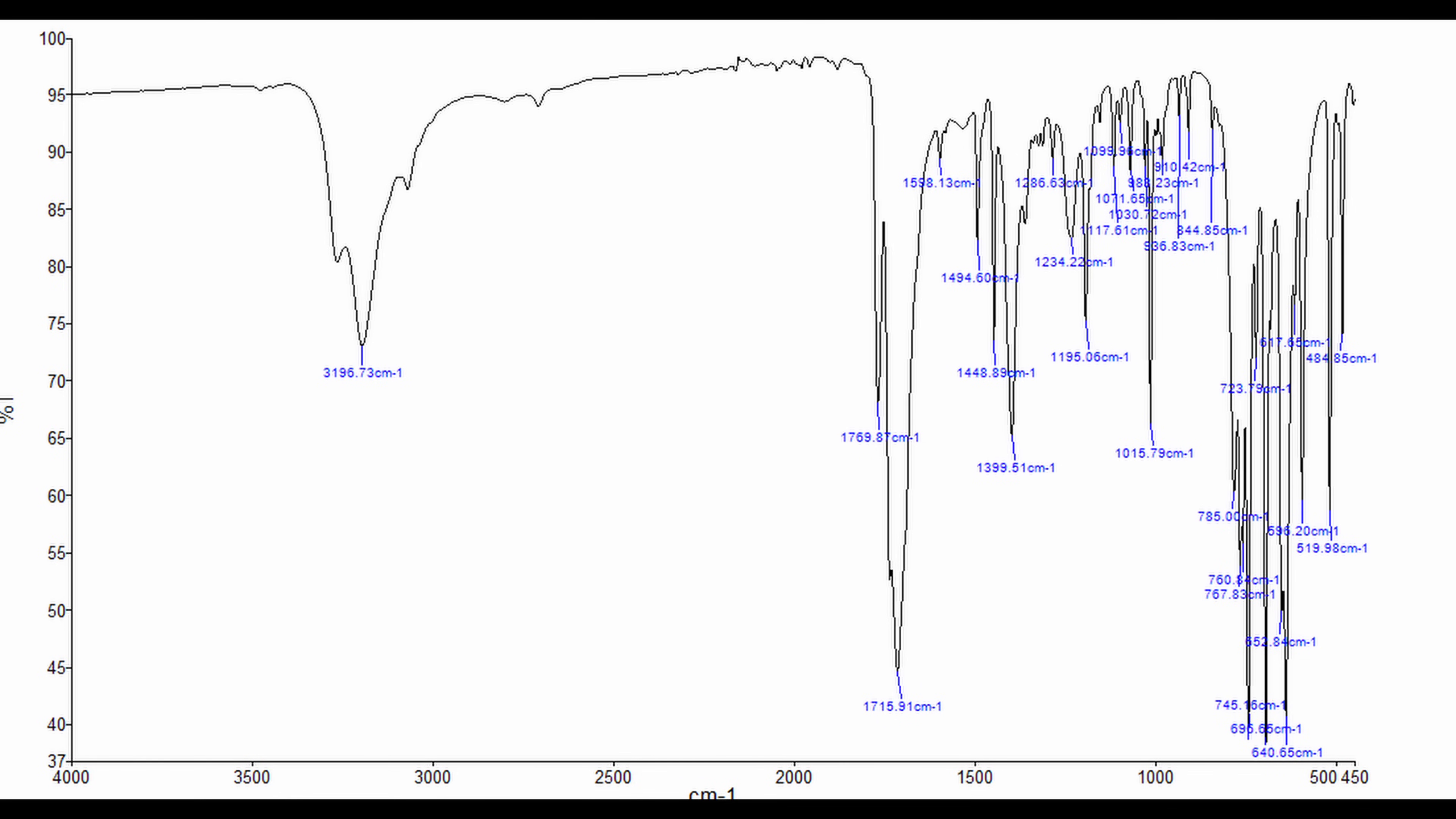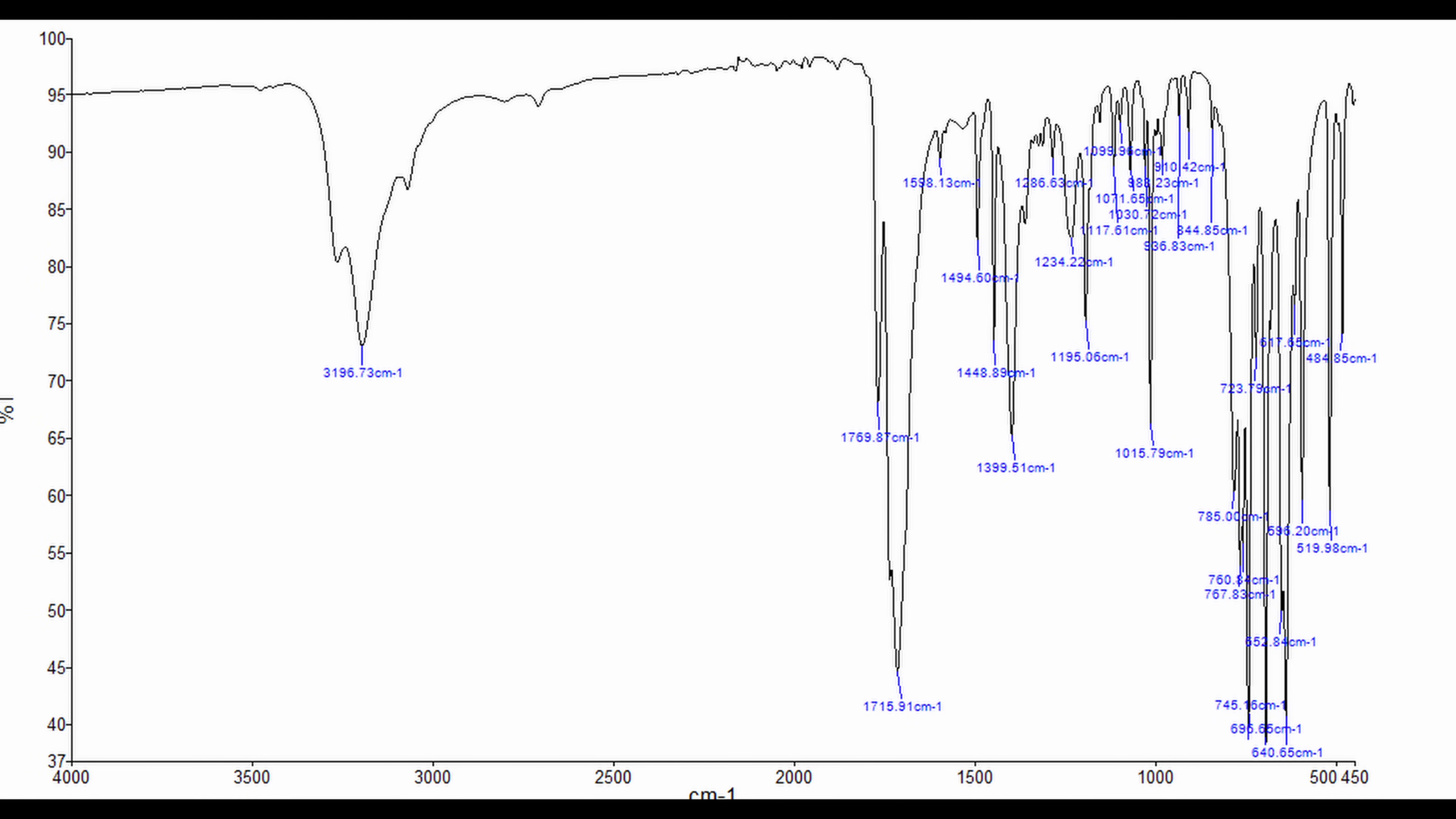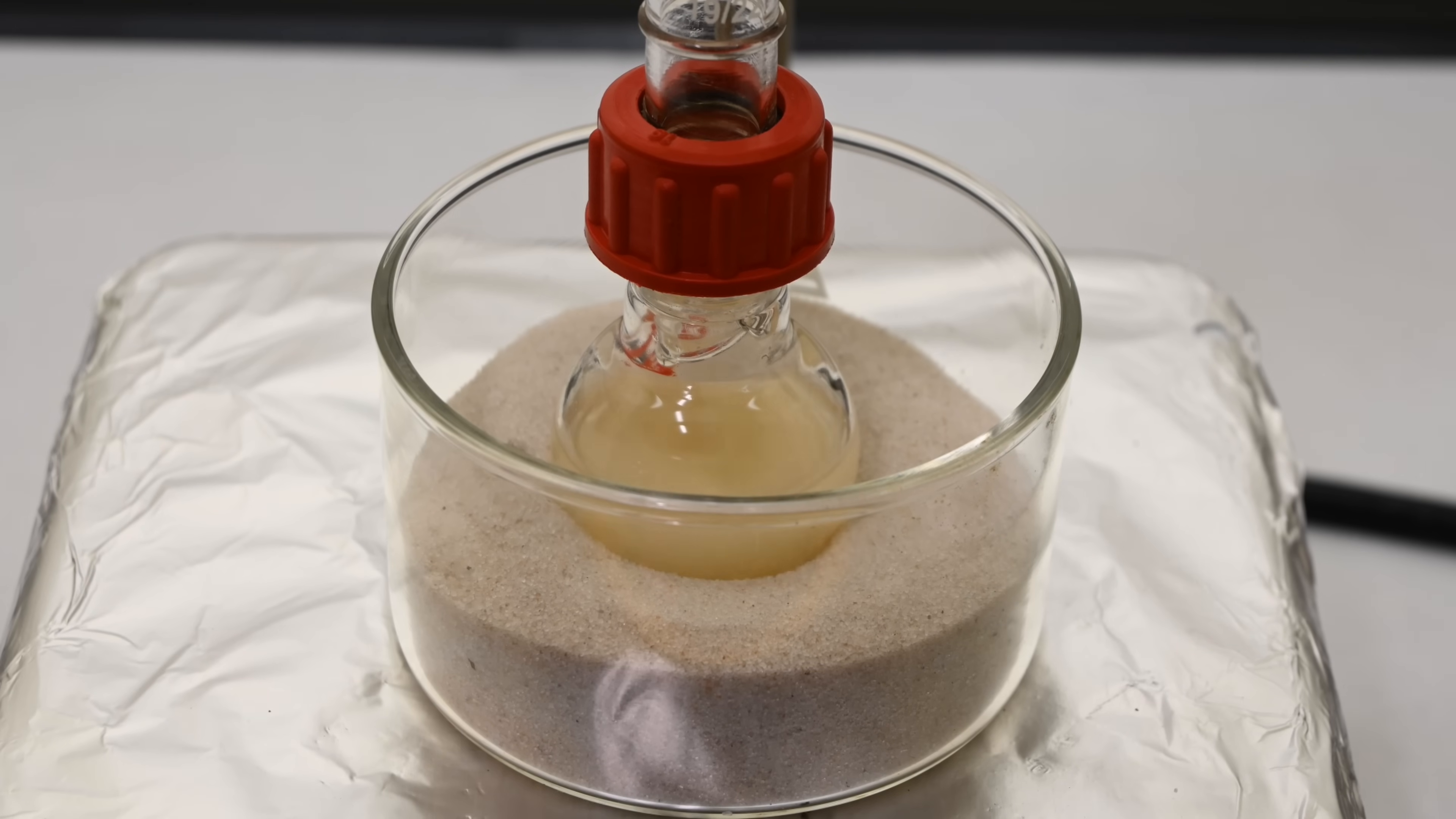The amide 1 band, predominantly associated with the carbonyl stretching vibration, typically appears clearly and strongly near 1700, reflecting the presence of a lactam carbonyl group within the hydantoin ring structure. Additionally, the amide 2 band arising from an N-H bond, produced by coupling of C-N stretching, typically emerges around 1550 to 1500, confirming the successful ring closure and nitrogen incorporation into the ring structure. All this comes together to say that we have successfully synthesized Dilantin.